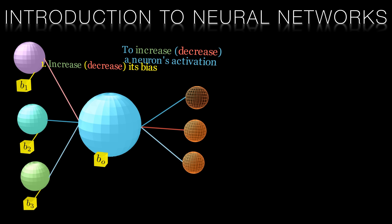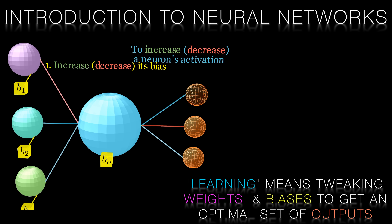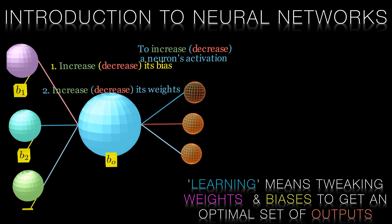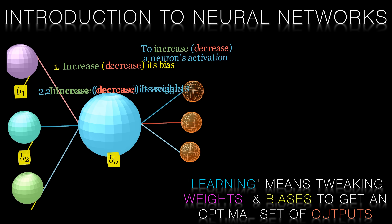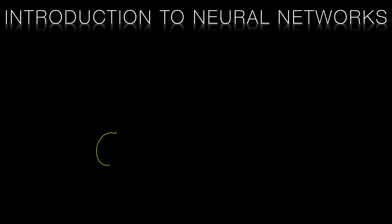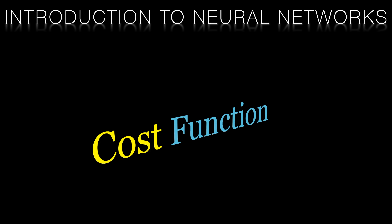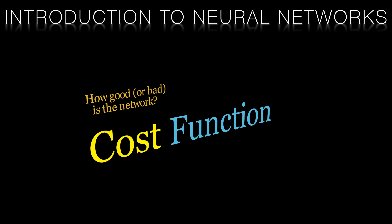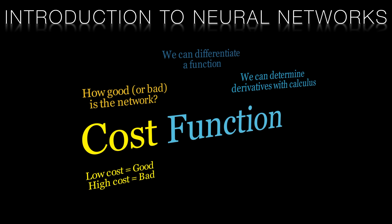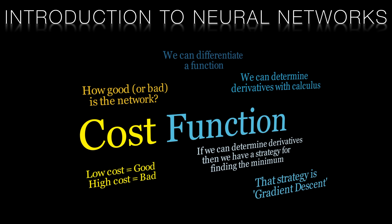In this context, learning simply means nudging the weights and biases of our network to achieve an optimal set of outputs. The phrase 'optimal set of outputs' is not a subjective term. We use a mathematical function — a cost function — to measure how accurate our neural network is. We want to obtain a set of weights and biases that minimize this cost function.